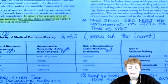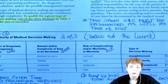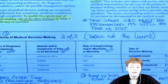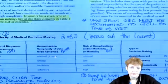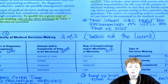For the second column — data — it's the amount and/or complexity of data to be reviewed. The types are minimal or none, limited, moderate, extensive. When they're talking about data, it could be reviewing an x-ray, reviewing reports from a test that was run, or lab results. Anything like that is reviewing of data.